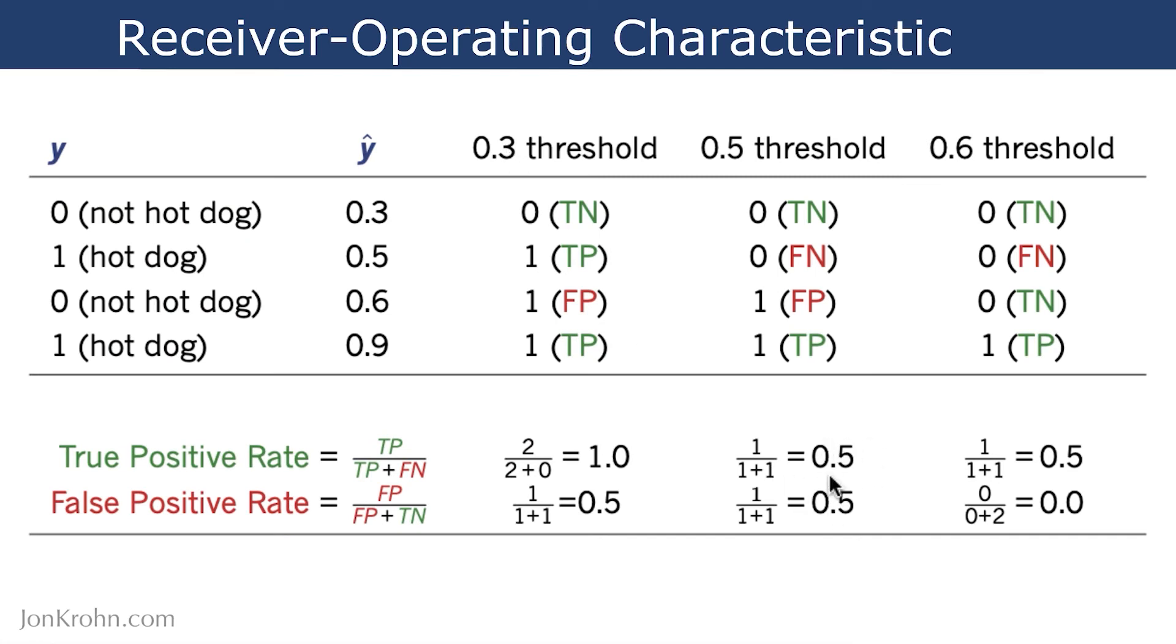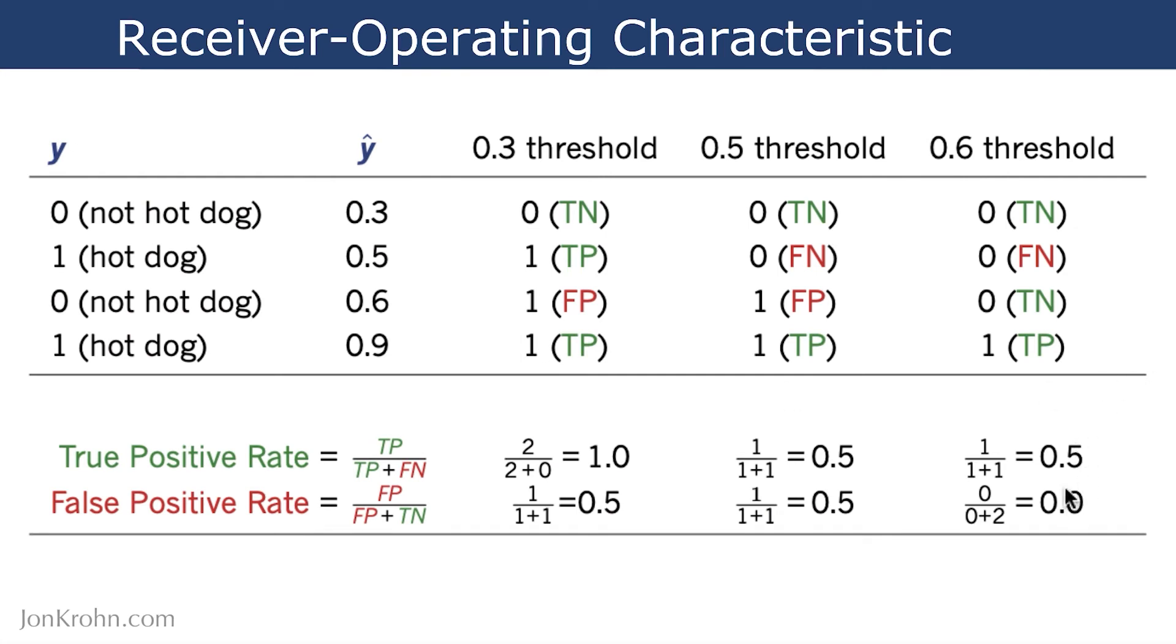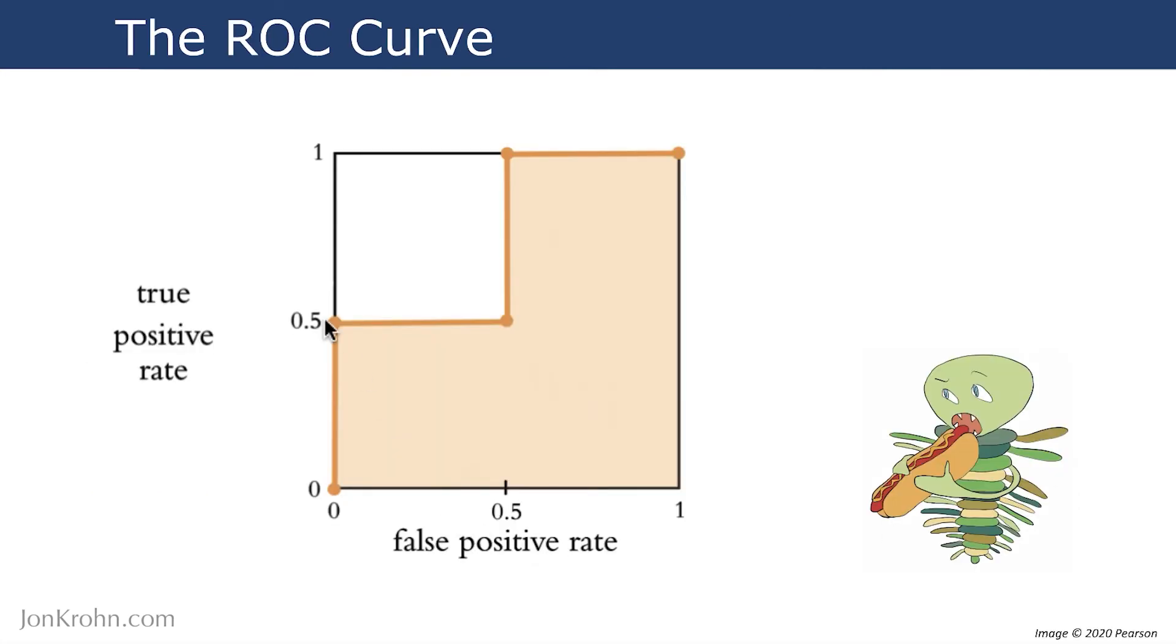And then similarly 0.5 and 0.5, that goes right here. And finally 0.5 and 0 goes right here. And then we also add an extra coordinate at 0.0 and 1.1. And then we interpolate between those points.